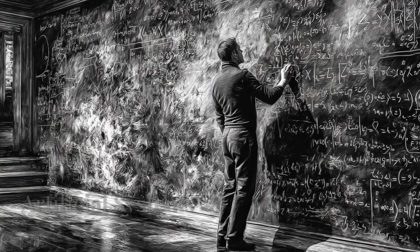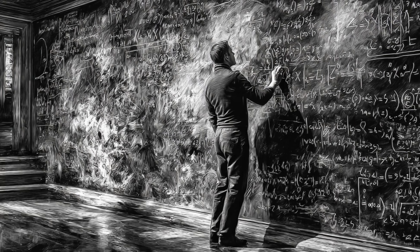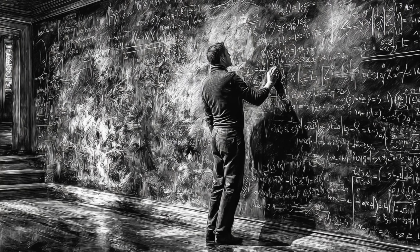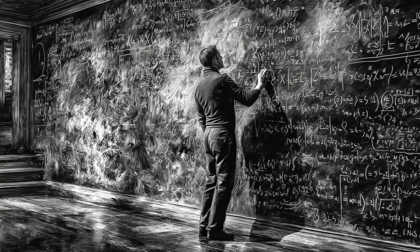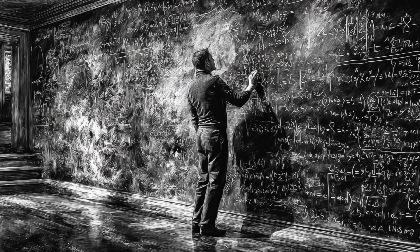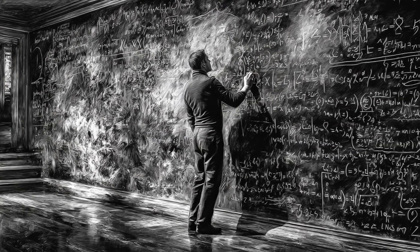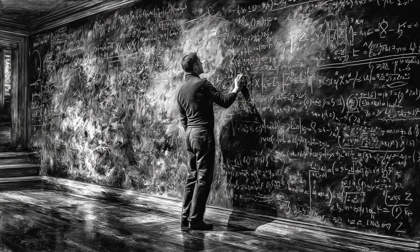In artificial systems this translates to coherent memory without action loops, balanced symbolic recursion with no feedback overflow, and stability across multi-temporal awareness threads.